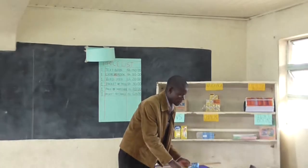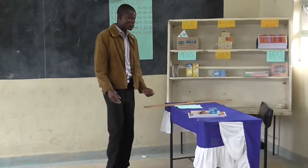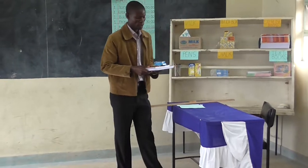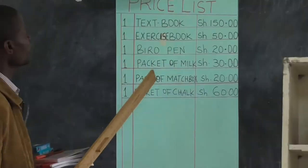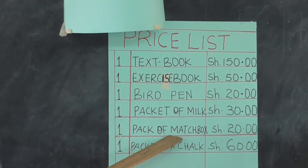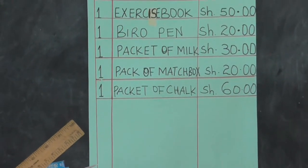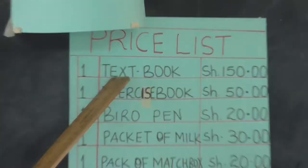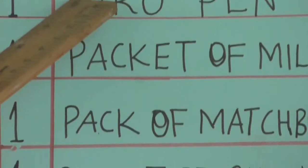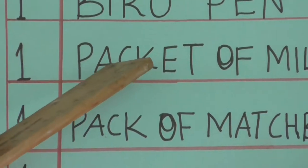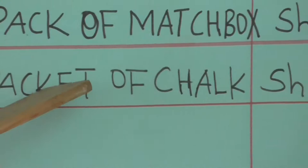After buying these items I can't just go with them without paying for them. To pay for these items I need to know the price of each and every item. Next to the shop we have a list — on this list I have the names of the items: textbooks, exercise books, bio pens, packets of milk, matchbox, and packets of chalk.